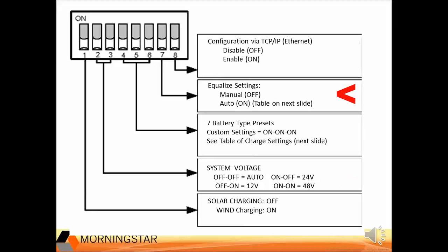Automatic equalize can be disabled with DIP switch 7, but the manual equalize will still operate according to the 4, 5, 6 factory or custom presets. The other custom program settings are enabled with switches 4, 5, and 6 on only.